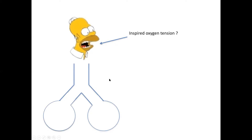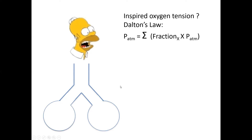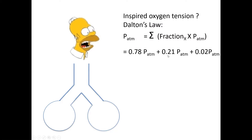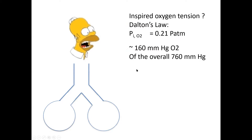This is going to be fairly math-heavy, but I'll move through it quickly. The inspired oxygen tension is based on Dalton's Law — the partial pressure of a gas times the total pressure of gases in the environment, in this case atmospheric pressure. The total pressure of nitrogen, oxygen, and other minor gases should equal 760 mmHg. For oxygen specifically, you take 21% times atmospheric pressure of 760, and you get 160 mmHg. So all of us at room air are breathing in an oxygen tension of 160.